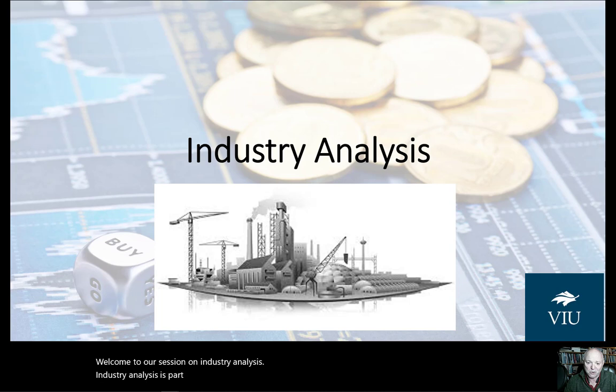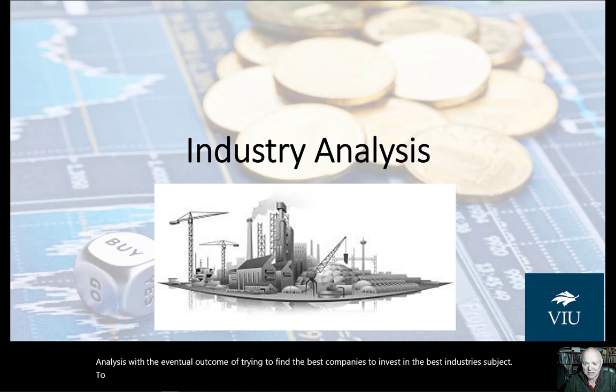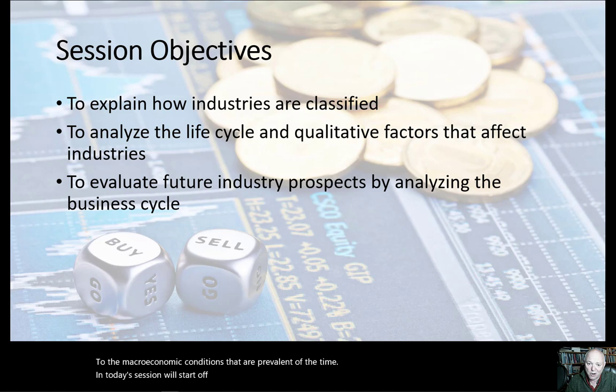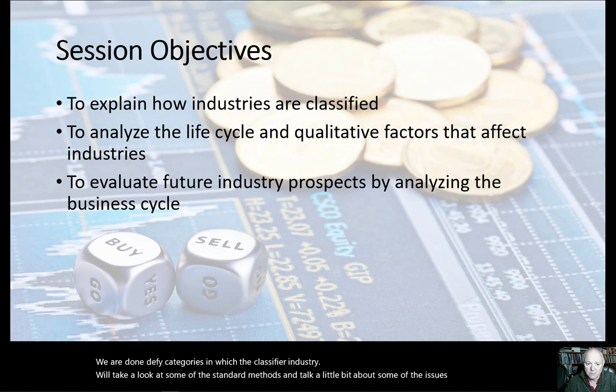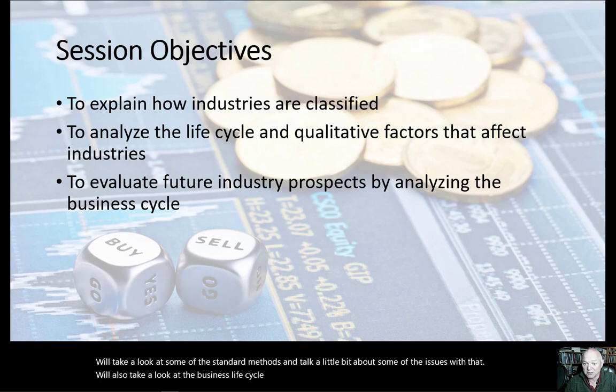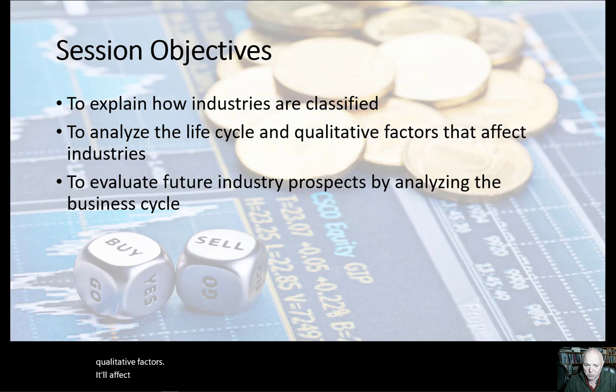Industry analysis is part of a top-down analysis with the eventual outcome of trying to find the best companies to invest in, in the best industries, subject to the macroeconomic conditions that are prevalent at the time. In today's session we'll start off by looking at how we identify categories to classify our industries, standard methods, the business life cycle, the industry life cycle, the economic life cycle, and qualitative factors. We'll also learn how to evaluate future industry prospects by analyzing the business cycle.